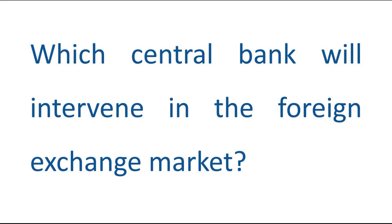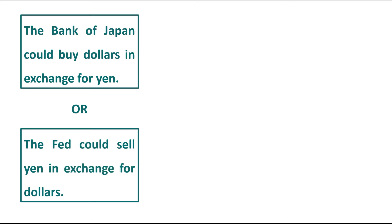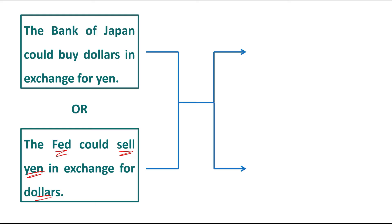There are two possible solutions. First, the Bank of Japan could buy dollars in exchange for yen. Second, the Federal Reserve — the central bank of the United States — could sell yen in exchange for dollars, using its foreign exchange reserves. Both solutions will lead to a common conclusion, regardless of whether the Bank of Japan or the Federal Reserve intervenes in the market.